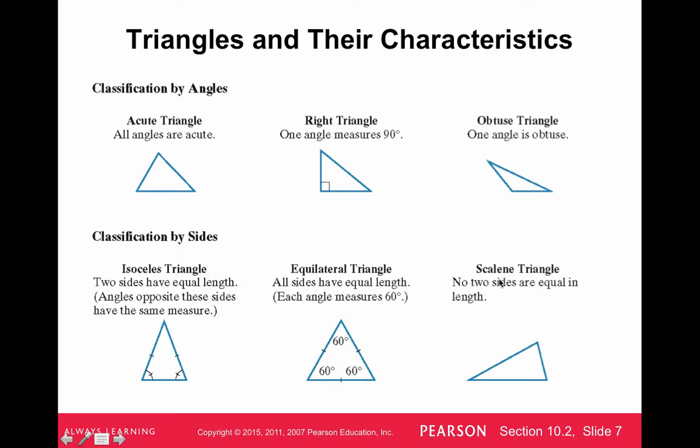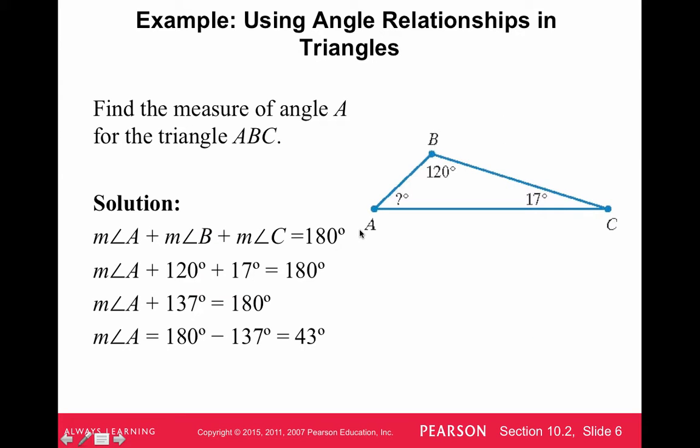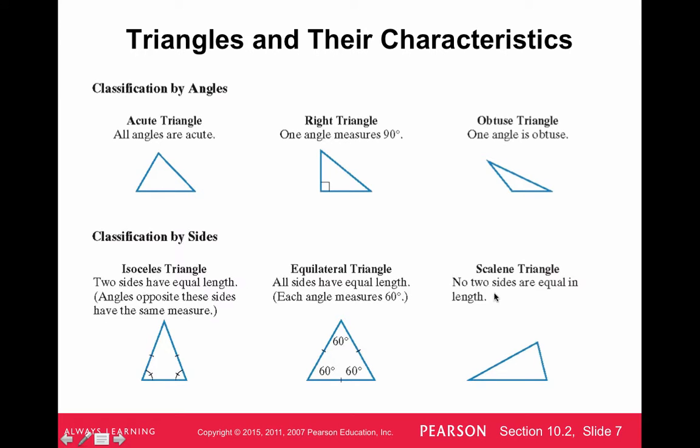And then a scalene triangle, no two sides are equal in length, that's more like this example here. But we'll be looking mainly at right triangles eventually. Just good to know these other names of triangles, isosceles and equilateral.